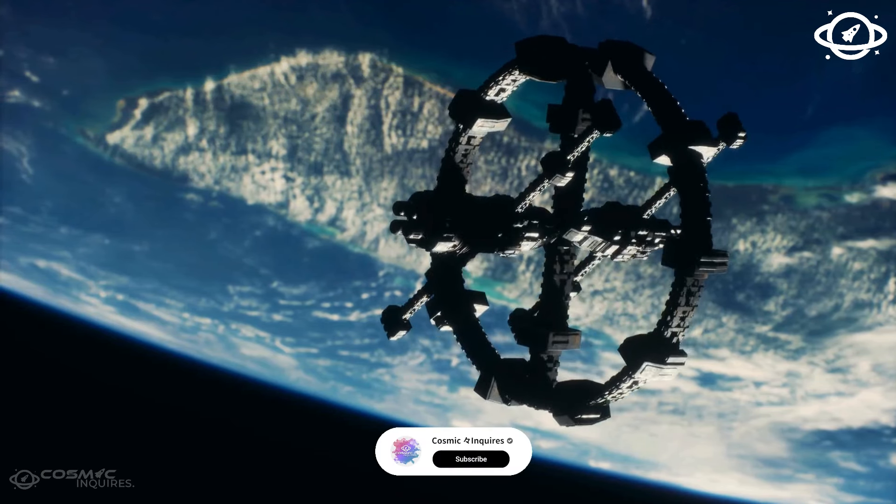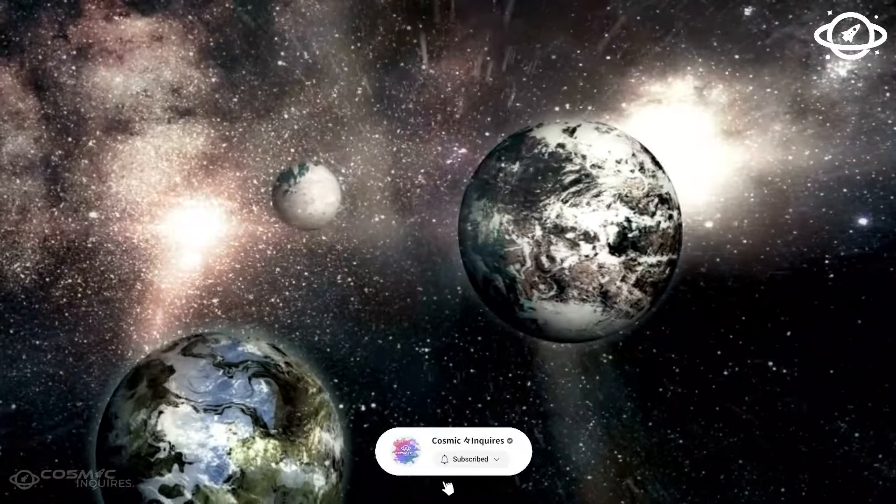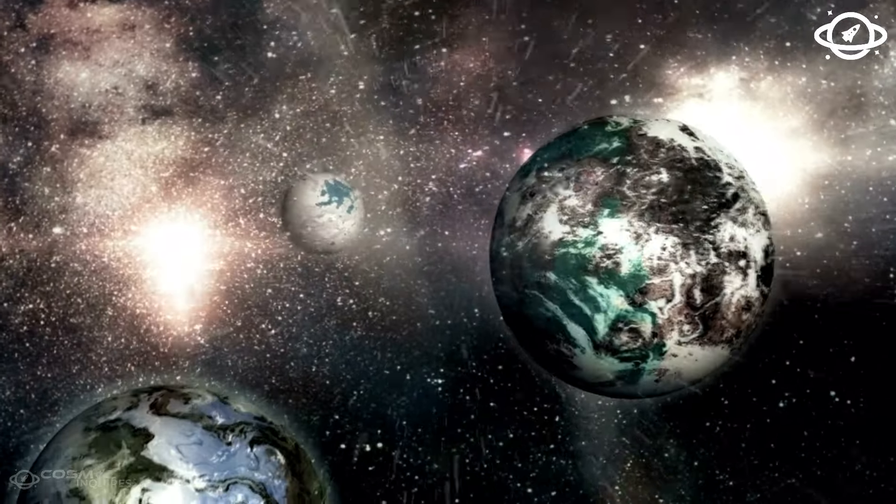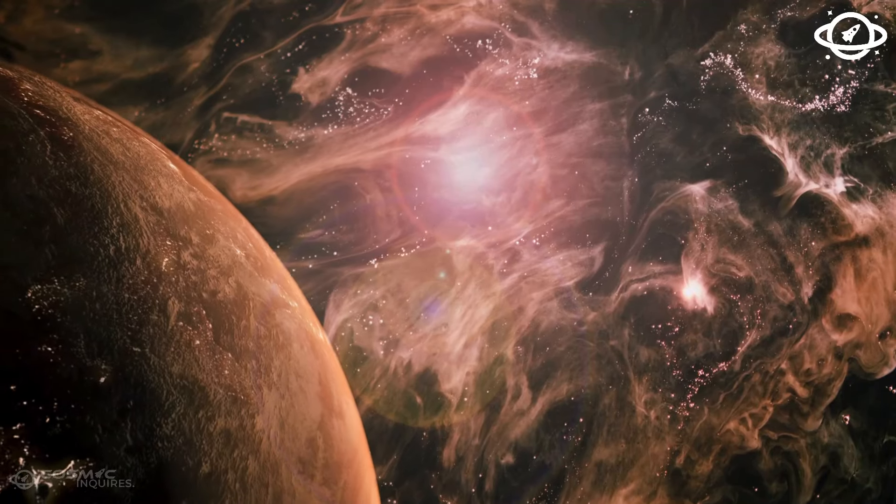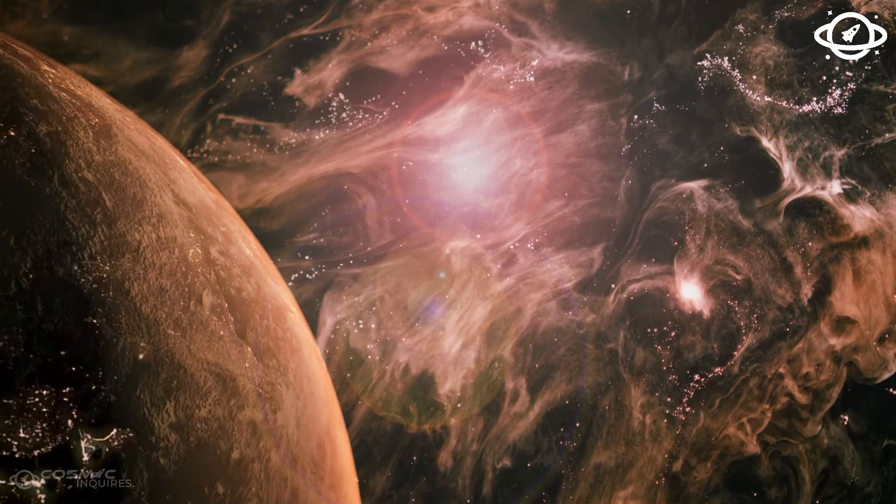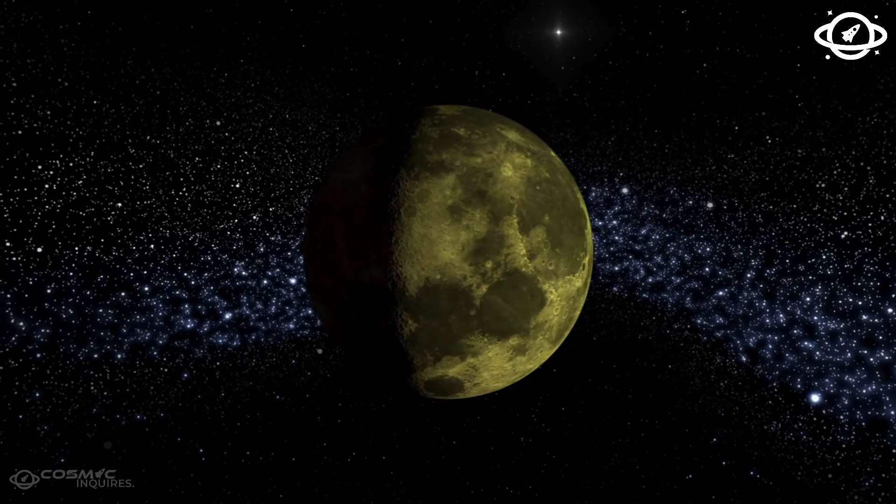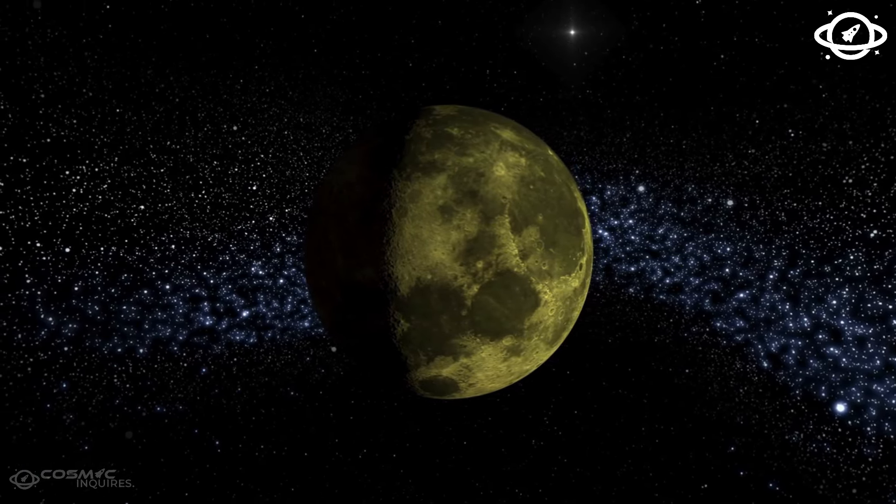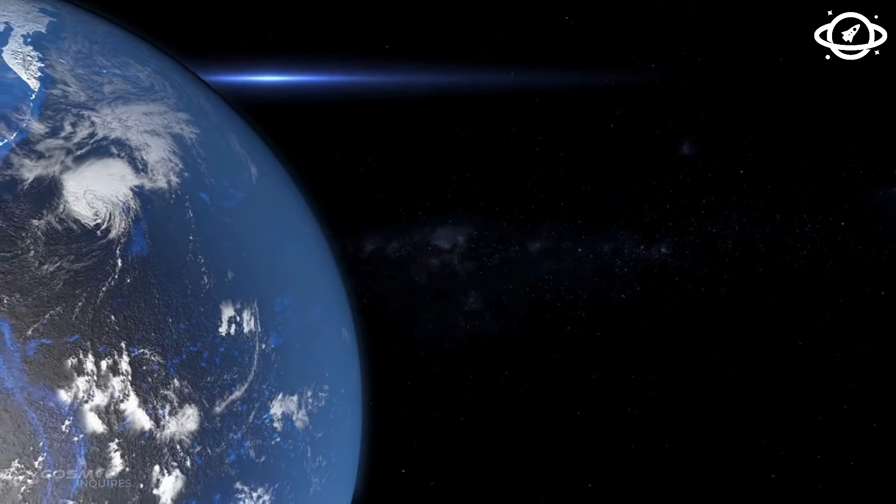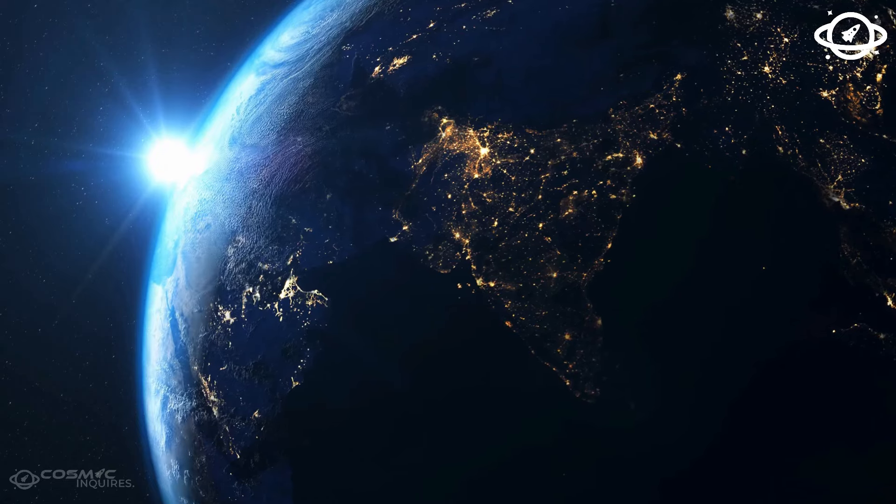The team initially isolated the code responsible for handling the spacecraft's data and relocated it to a new location in the FDS memory on April 18. As mentioned earlier, it takes about 22.5 hours for a radio signal to travel to Voyager 1 and another 22.5 hours for a signal to return.